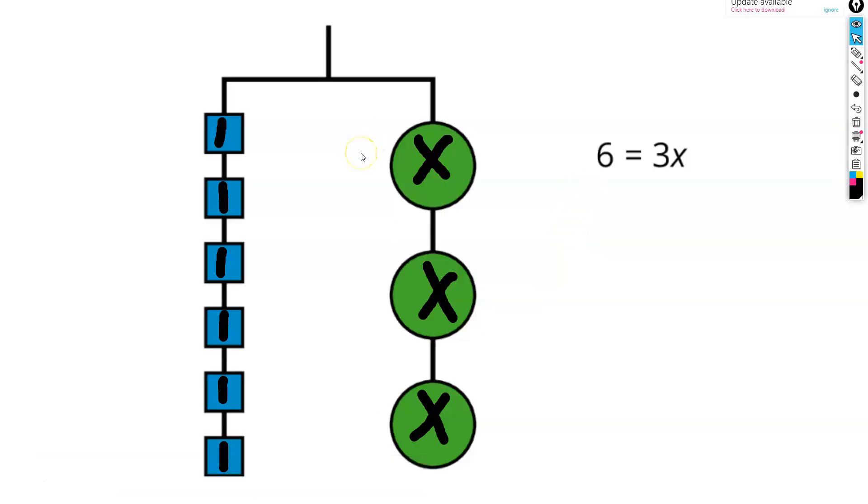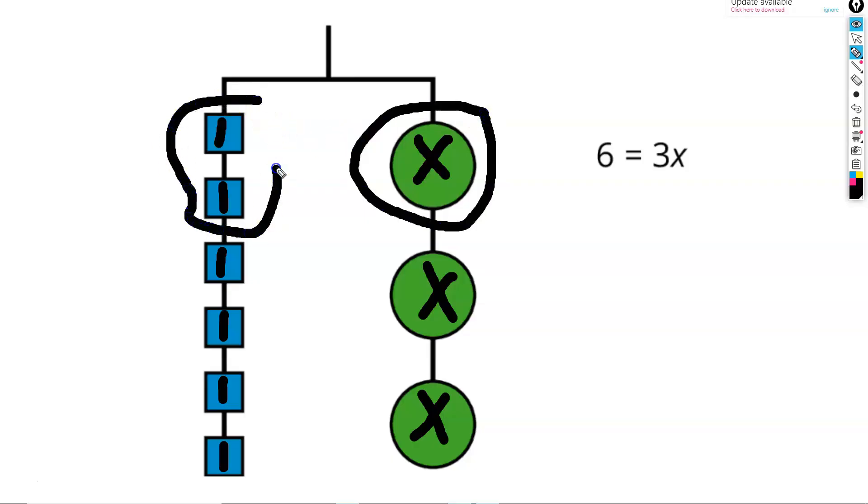This leaves us with 6 ones weighing the same as 3 x's. This will help us find out how much 1 x weighs, because 1 x is going to be a third of the total weight on our right side. And if we only want to keep a third of our right side, we also need to only keep a third of our left side to let the hanger stay balanced.